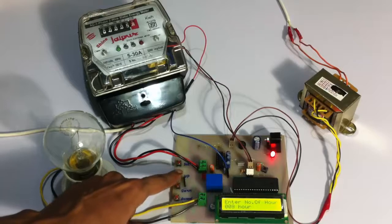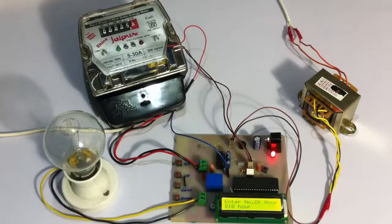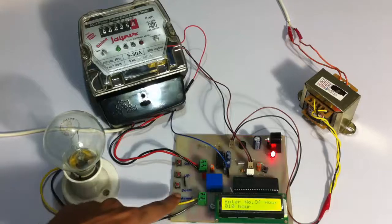What it symbolizes is it will calculate the energy consumption for 10 hours when the unit was 10 rupees per unit. Now let us set it through the normal mode.